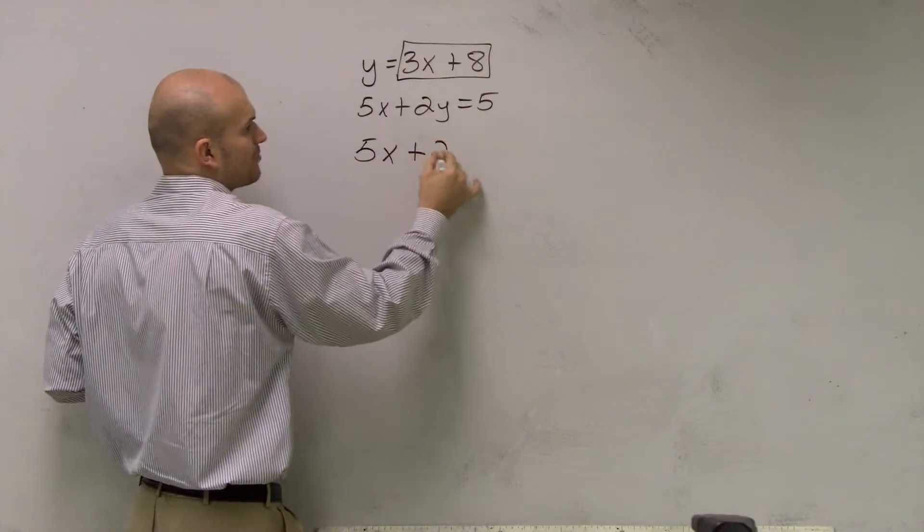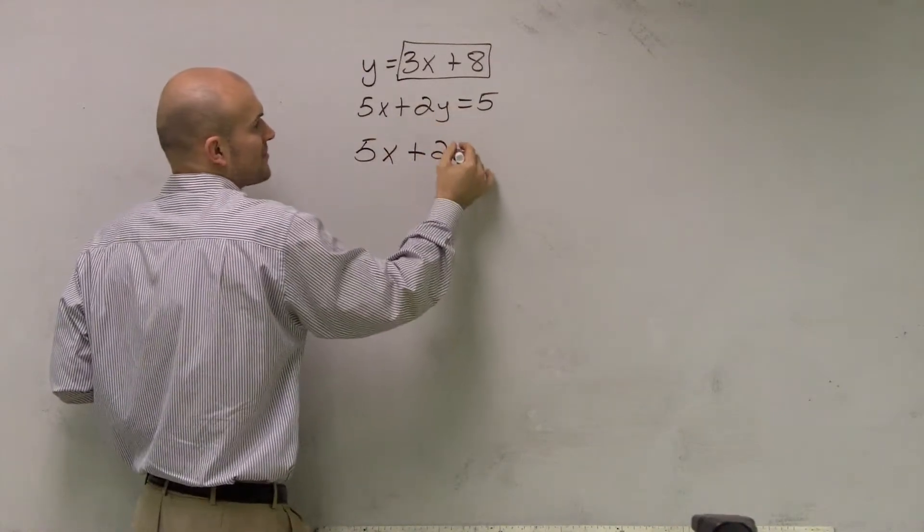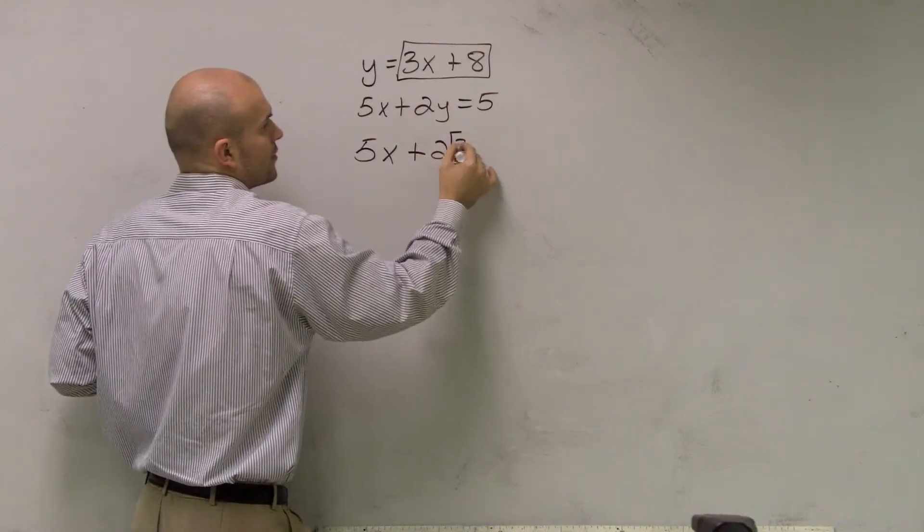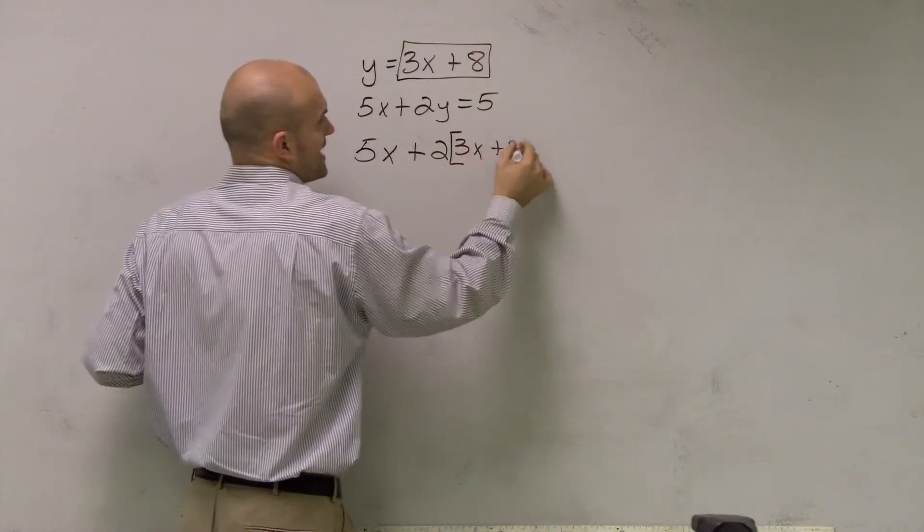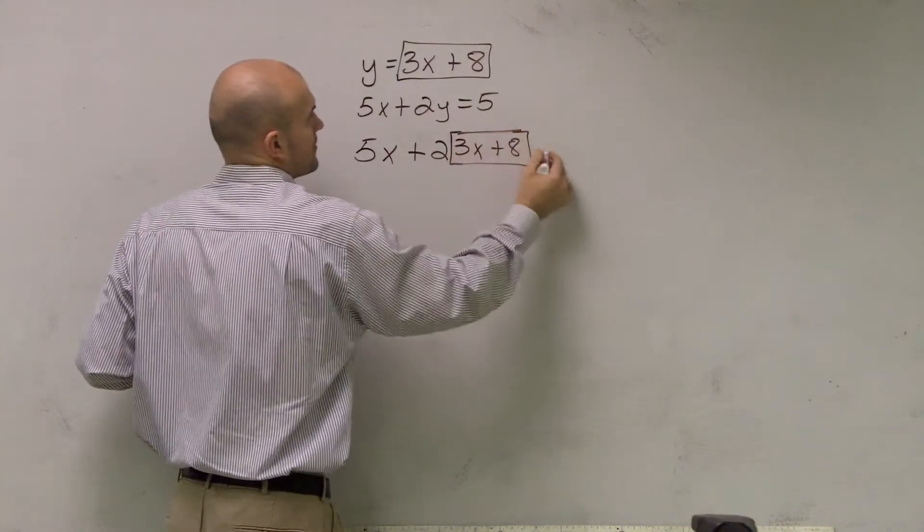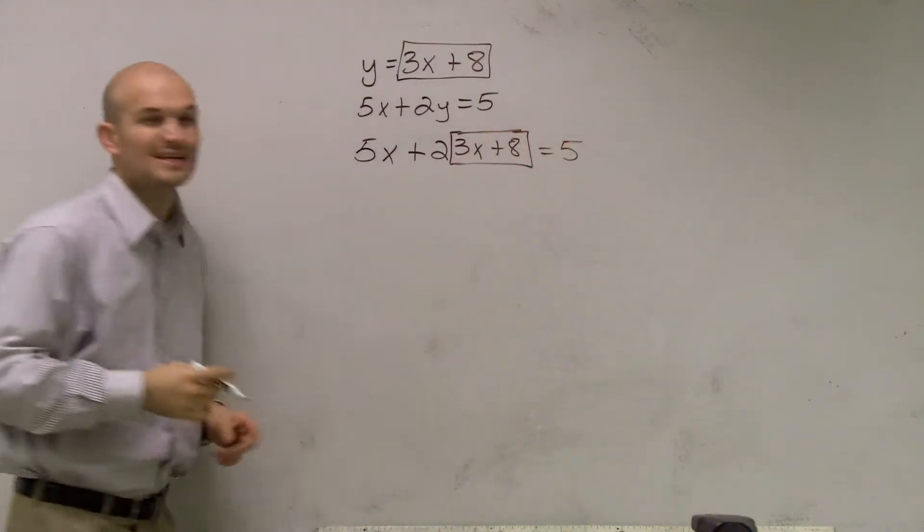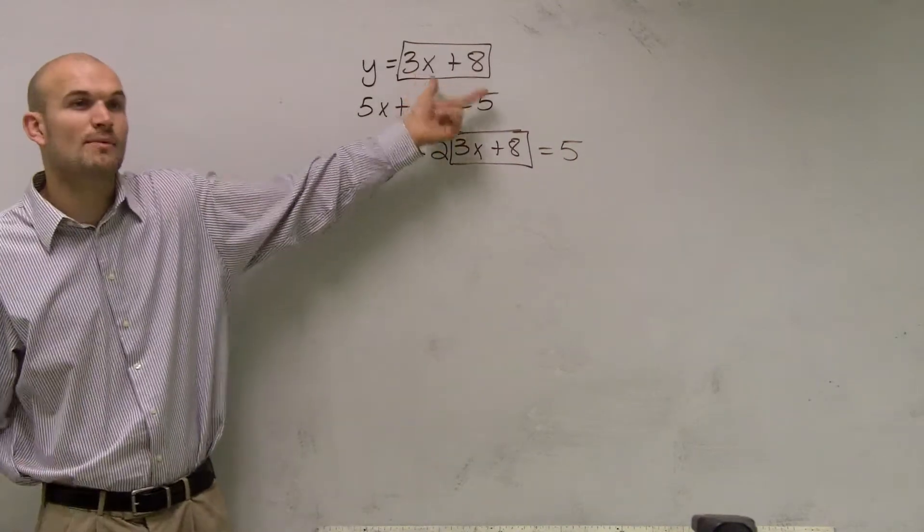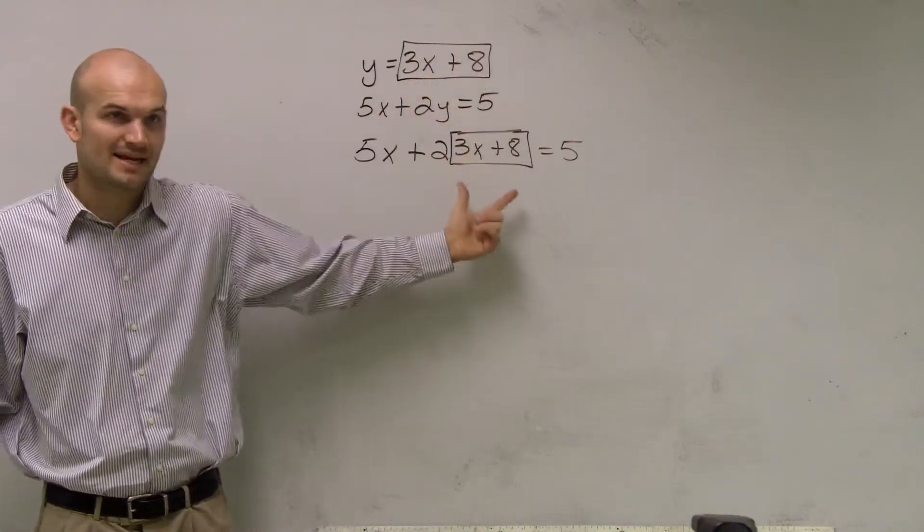So therefore, I have 5x plus 2 times 3x plus 8 equals 5. So you guys see what I did? All I did was I plugged in what my value of y was into my second equation.